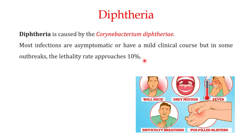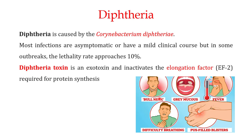Some of the major symptoms of diphtheria include grey mucus, fever, pus-filled blisters, difficulty breathing, and bull neck. Anti-serum is used specifically in conditions where you are infected by Corynebacterium diphtheriae that has the ability to produce the diphtheria toxin. Not all strains of Corynebacterium diphtheriae are able to produce this toxin, but for those that do, you can use anti-serum in these particular conditions.